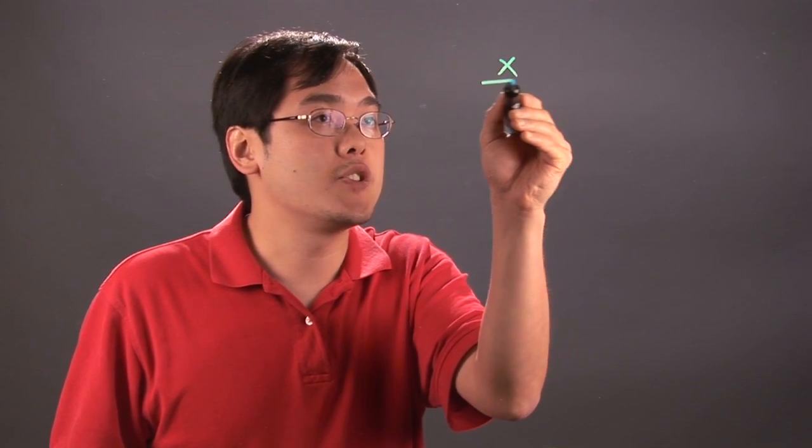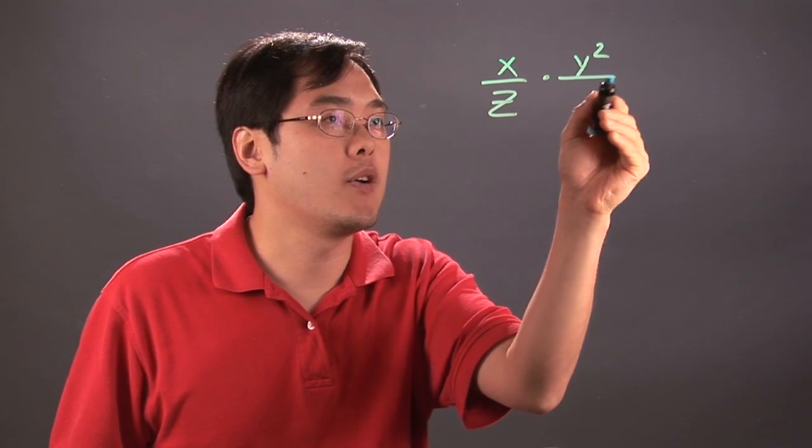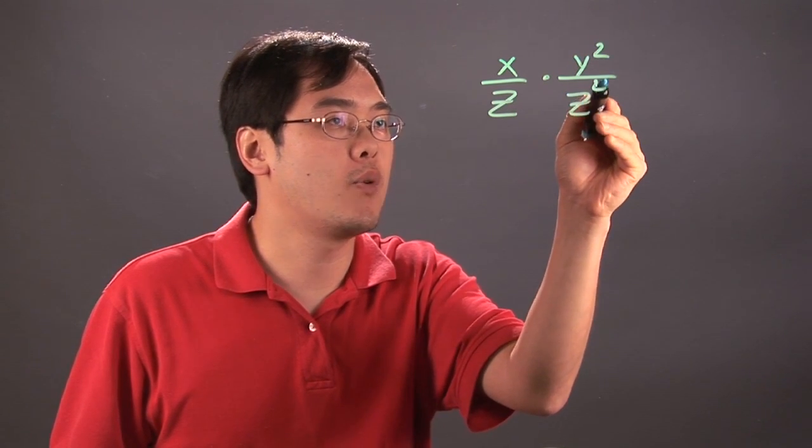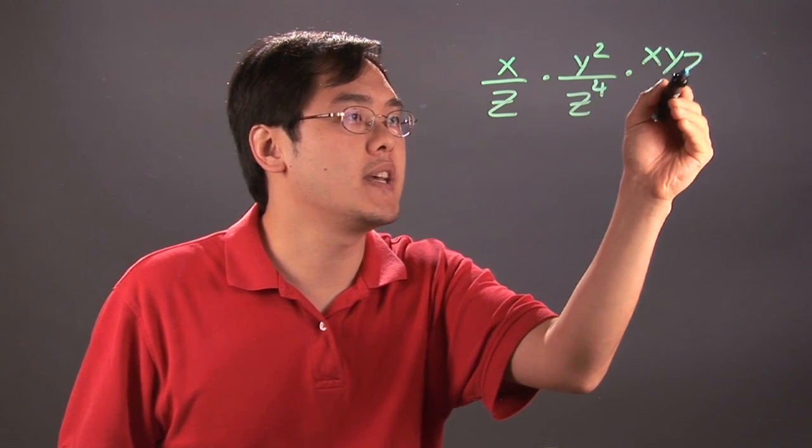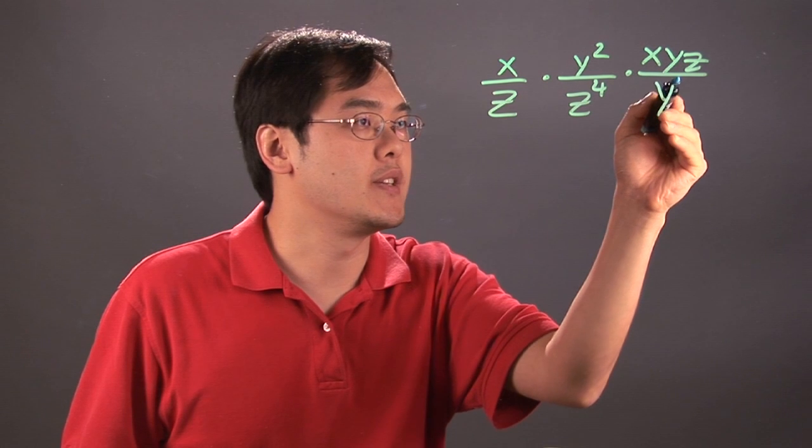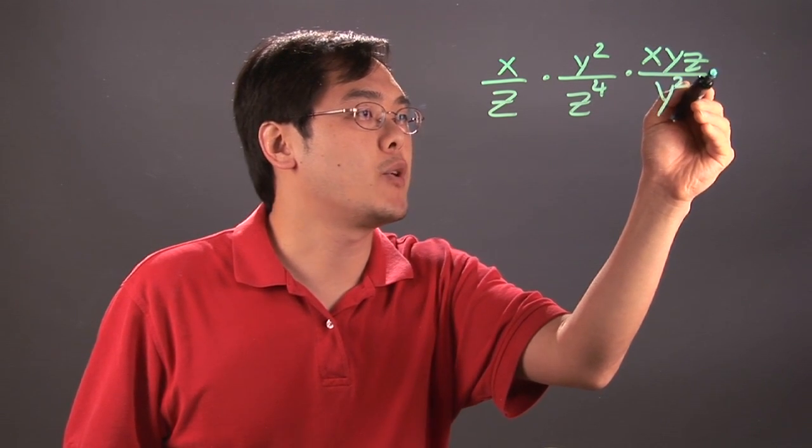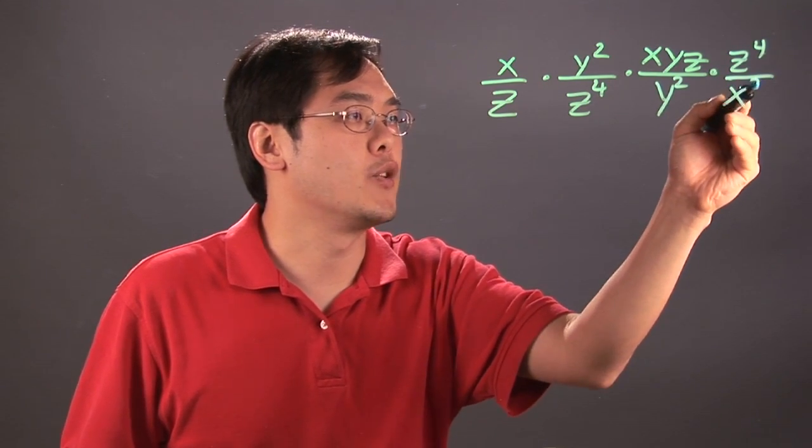Let's just say you have x over z and you're multiplying y squared over z to the fourth, times xyz over y squared, and then multiply by z to the fourth over x cubed.